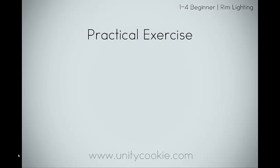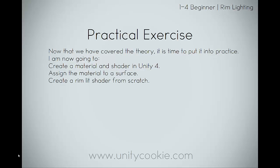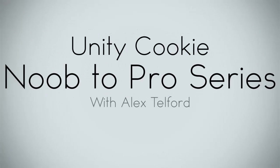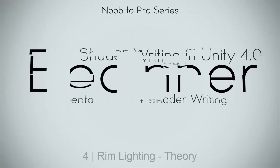We also add in some colour tint. Now let's go to the practical. We've covered the theory, so now we're going to put it to practice. I'm going to create a material and shade it in Unity 4, assign the material to the surface, and create a rim lit shader from scratch. I'll be re-explaining a lot of this theory as I write the shader, so if none of that made sense, don't worry — we'll go ahead and re-explain it.